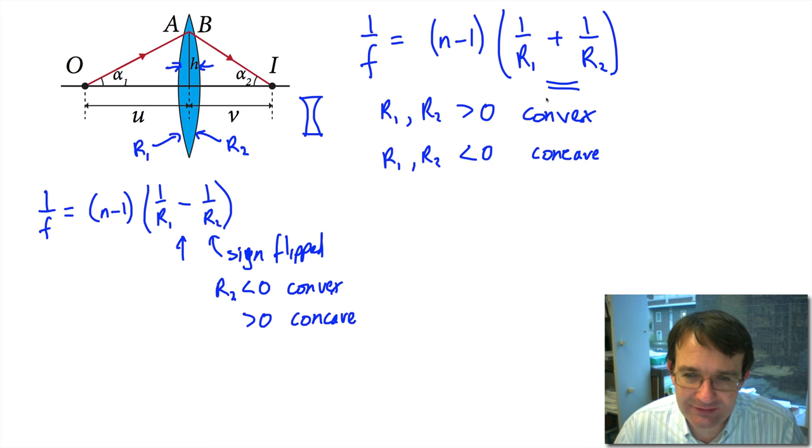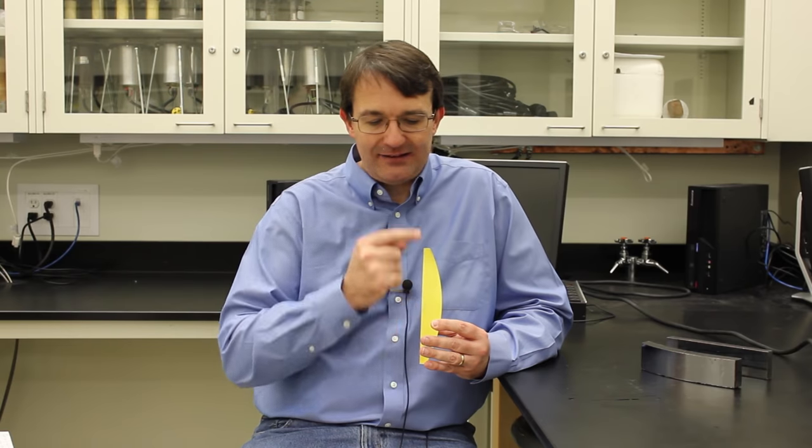Since we're only considering thin lenses, we use the positive sign convention. We've now seen how the focal length of a lens is related to the radii of curvature of both sides and to the refractive index of the lens material. However, during this derivation we made several small angle approximations, essentially assuming the lens radius is much less than the radii of curvature. In precision optical instruments these approximations break down and give rise to optical defects known as aberrations, which we'll look at in the next video.